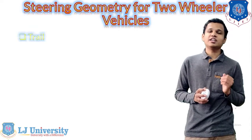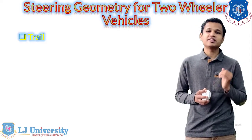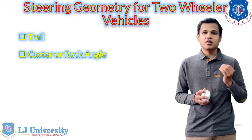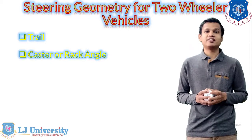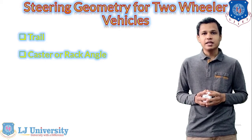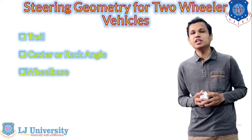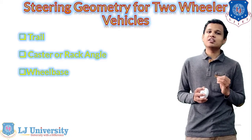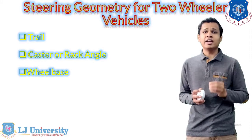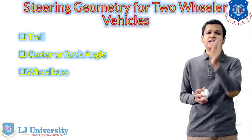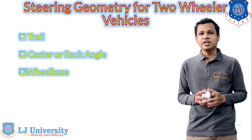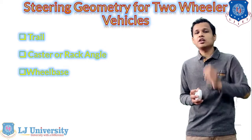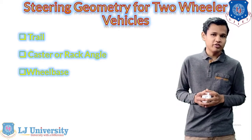The first one is the trail, the second one is the caster — also known as the rake angle — and the third one is the wheelbase. The definition and the angle that we measure for the caster will be similar to the four wheelers.